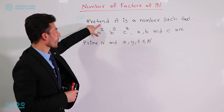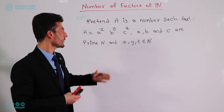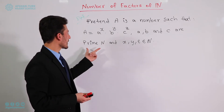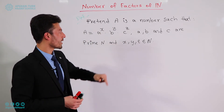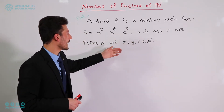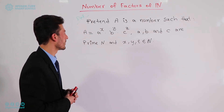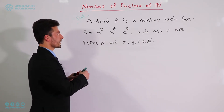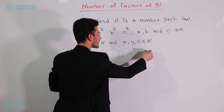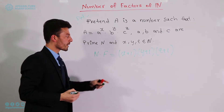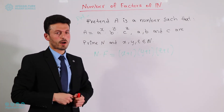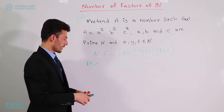Here is the formula: if a is a natural number and after prime factorization it equals a to the power of x times b to the power of y times c to the power of z — where a, b, c are prime numbers and x, y, z are natural numbers — then the number of factors is given by the formula: (x + 1) times (y + 1) times (z + 1). Using this formula, you can easily find how many factors a number has.